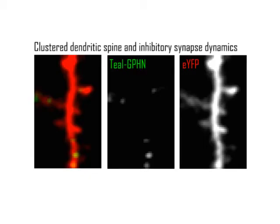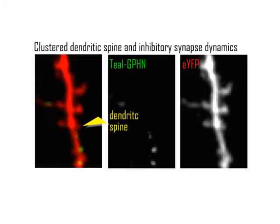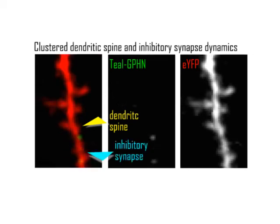Finally, we found that inhibitory synapses and dendritic spine dynamics were spatially clustered along the arbor at a distance of approximately 10 microns. The frequency of these clustered events also increased during monocular deprivation, demonstrating that this coordinated plasticity is driven by experience.